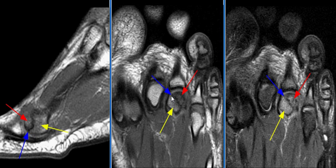There is mild irregularity of the volar aspect of the subchondral plate of the metatarsal head. Also noted is irregularity of the distal cortex of the third metatarsal, which may represent a subacute fracture. MR findings are compatible with Freiberg's infarction.